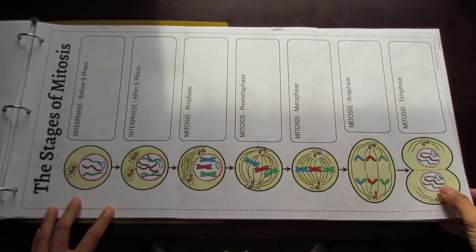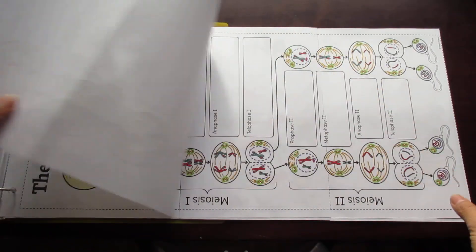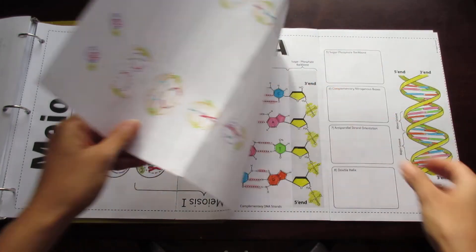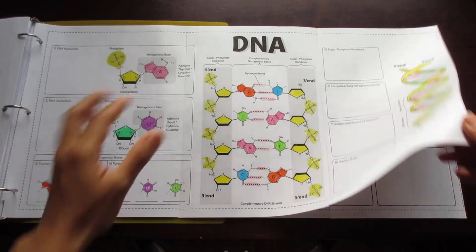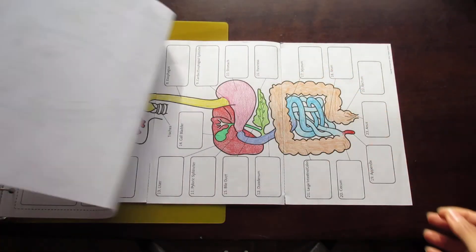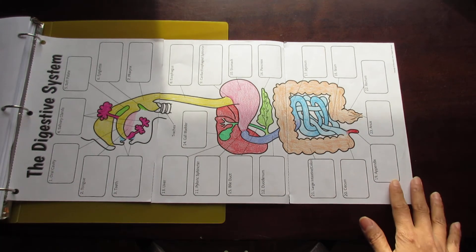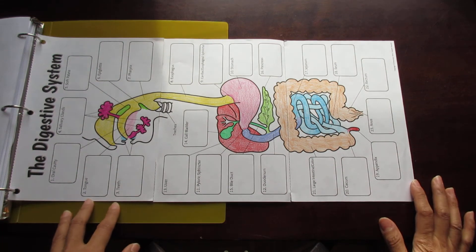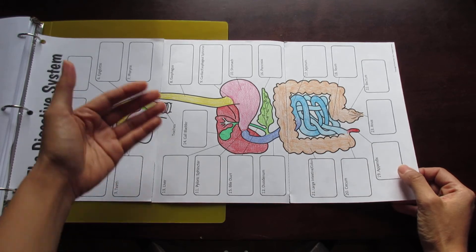This is the stages of mitosis, and I provide this with or without prometaphase, and meiosis as well. Then you have DNA structure and DNA replication. The last one is the digestive system. As you can see, this one is slightly smaller than the others because I cut it and sized it specifically for composition notebooks, so it fits perfectly into an interactive notebook without overflowing the edges.